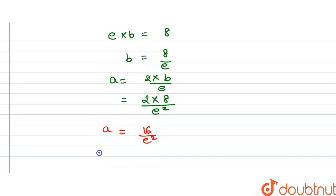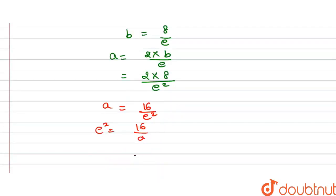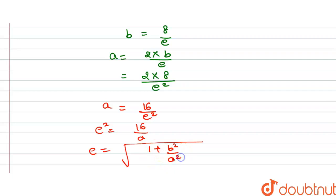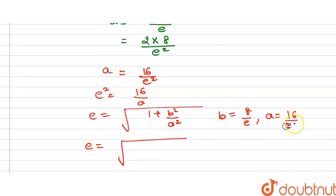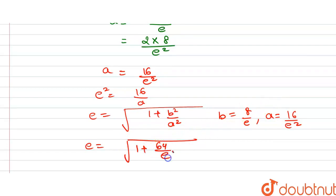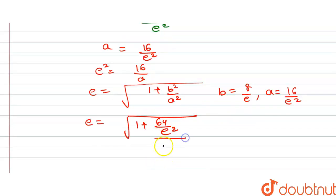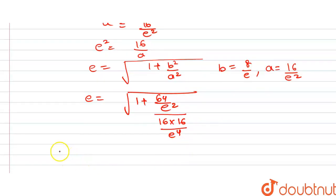Now we use the eccentricity formula: e² = 1 + b²/a². Substituting b = 8/e and a = 16/e², we get e² = 1 + (64/e²) / (256/e⁴), which simplifies to e² = 1 + (64/e²) × (e⁴/256) = 1 + e²/4.